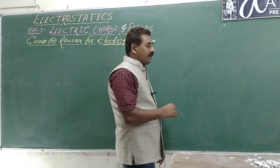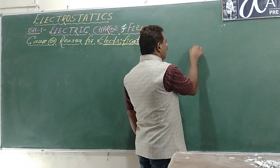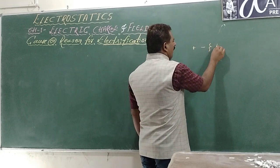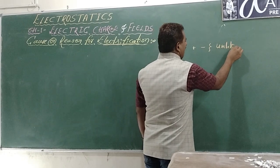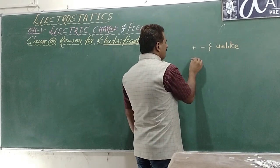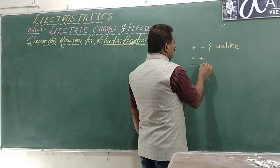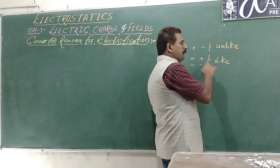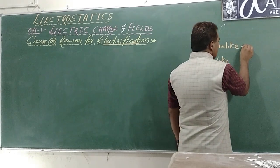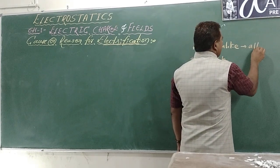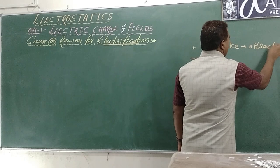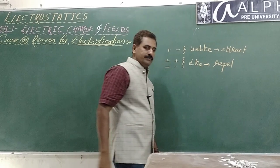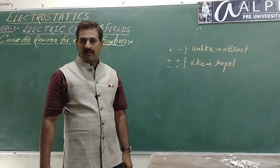That property you called electrification, and that property acquired by the material you called charge. How many types of charges are there? There are two types: positive and negative. Positive and negative together are called unlike charges. And positive-positive, negative-negative are called like charges. An important property: unlike charges attract and like charges repel.